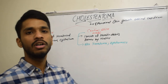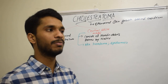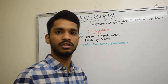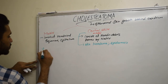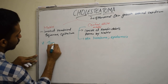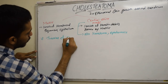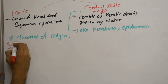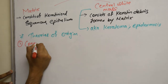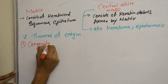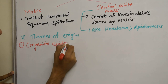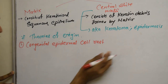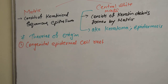We will briefly discuss the theories of origin of Cholesteatoma. The very first is congenital epidermal cell rests, which applies to the congenital form of Cholesteatoma.